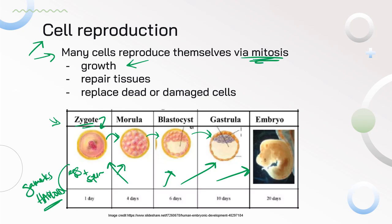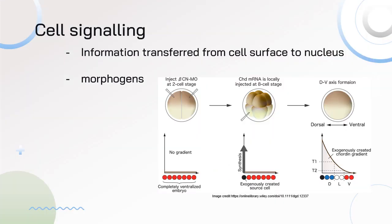Other functions of mitosis include repairing tissues — sometimes we get hurt and we need to fix our tissues — and replacing dead or damaged cells. One of the ways that we can turn on and turn off those genes is through cell signaling. In cell signaling, we transfer information from the surface of a cell to the nucleus, because that's where we need to activate or deactivate those genes.